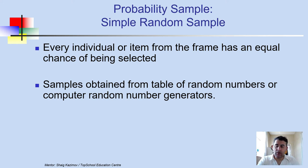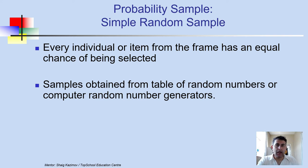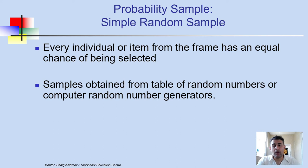Every individual item from the frame has an equal chance of being selected. In the United States with about 300 million people, every person has an equal chance to be selected for measurement — for weight, age, gender, number of family members, average salary, and so on. Samples are obtained from a table of random numbers or computer random number generators.